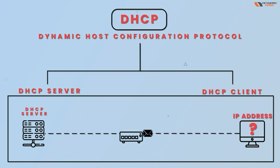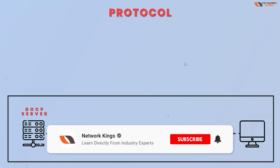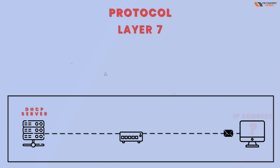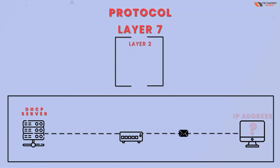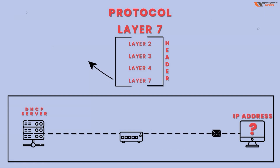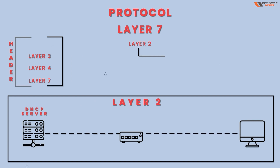Because DHCP is a Layer 7 protocol, the PC's packet will contain all the relevant headers: a Layer 2 header, a Layer 3 header, a Layer 4 header, and a Layer 7 header. All headers will be present because this is a Layer 7 protocol.